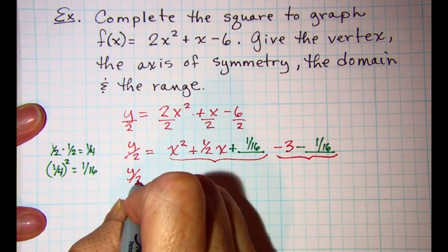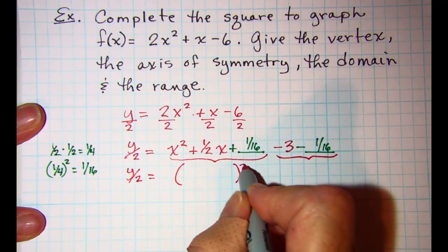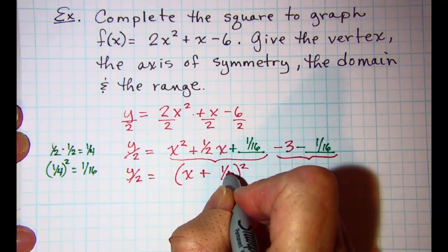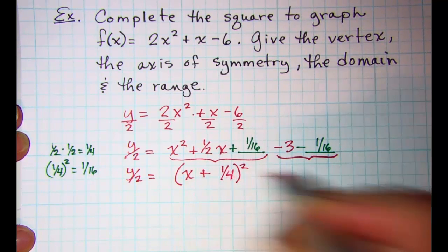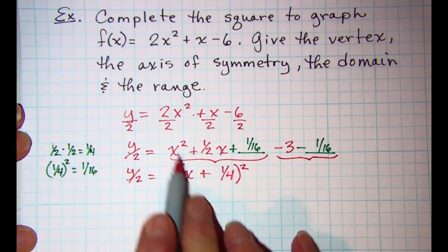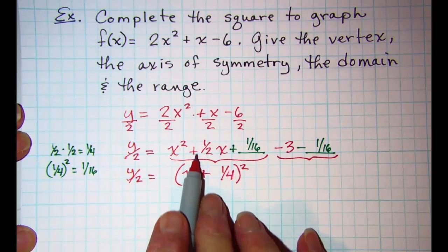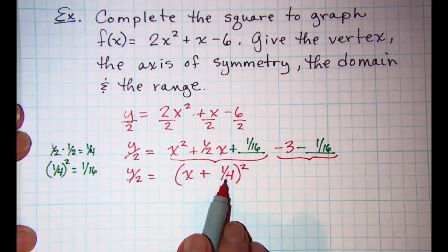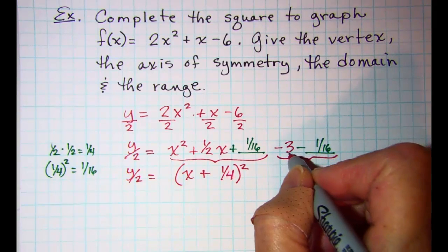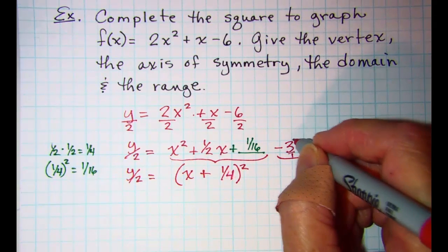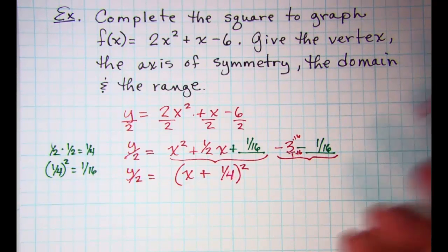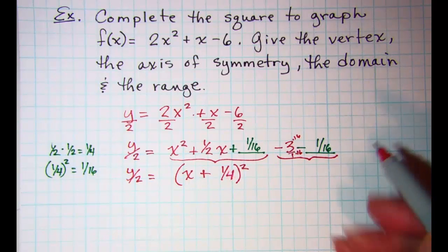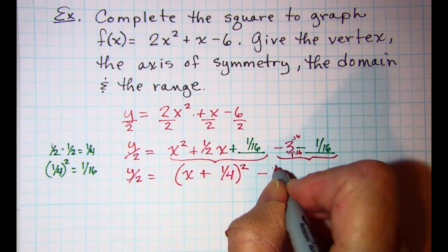Let me copy y over 2 and then this perfect square trinomial then factors into x plus 1 fourth. Remember that we always square root the first term to get our first term in the binomial. Then we take this operation from the middle term and then square root this last term in the trinomial for this one. Doing the math here we get this is 3 over 1. So we'll multiply top and bottom by 16 to get a common denominator. We have negative 48 over 16 and a negative 1 over 16. So now I have a negative 49 over 16.